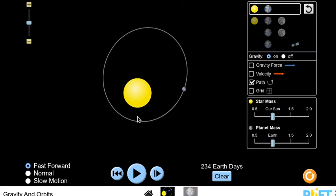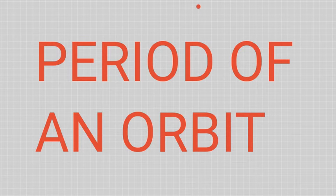So this would be some little planet moving around the Sun below it. Let's take a look at this period of an orbit.